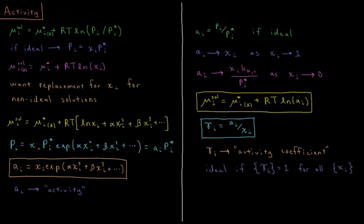Alpha, beta, etc. are all just constant parameters that we use to make this equation work. The vapor pressure of our component is then going to equal its mole fraction times the vapor pressure of the pure component, times the exponential of alpha times mole fraction squared, plus beta times mole fraction cubed, and so on for as many terms as we want to include.